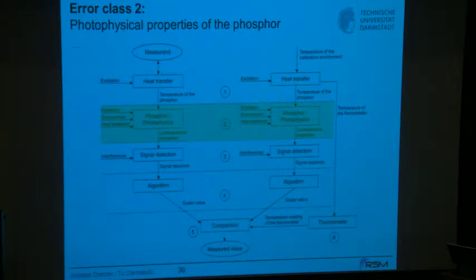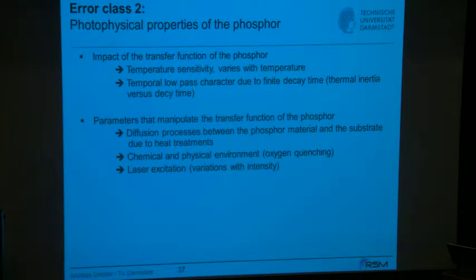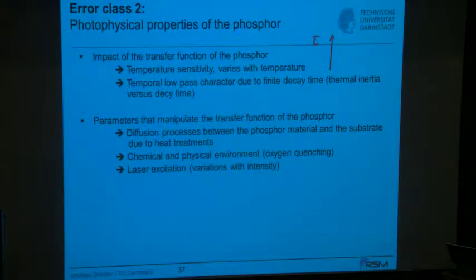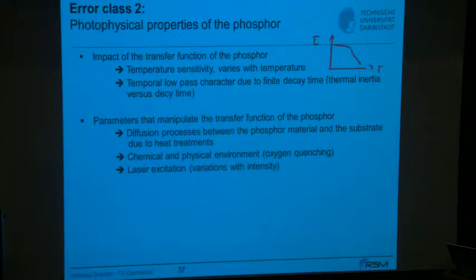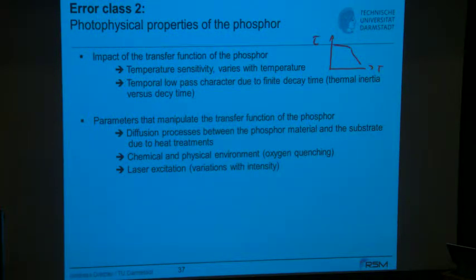The next error classes relate to photophysics. As a reminder, this phosphor has a non-linear decay time versus temperature relationship with two sensitivity regions: lower sensitivity at lower temperatures and higher sensitivity at higher temperatures. The system also has thermal inertia — the phosphor coating has a certain temporal low-pass filter characteristic — and the decay time itself acts as a low-pass filter threshold. If a temperature change is faster than the decay time, then you have a problem.